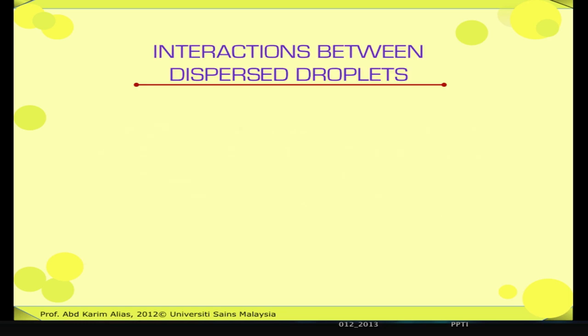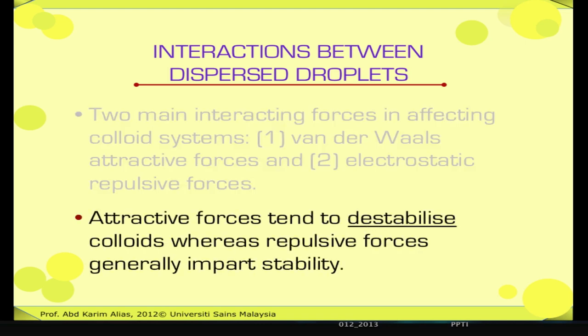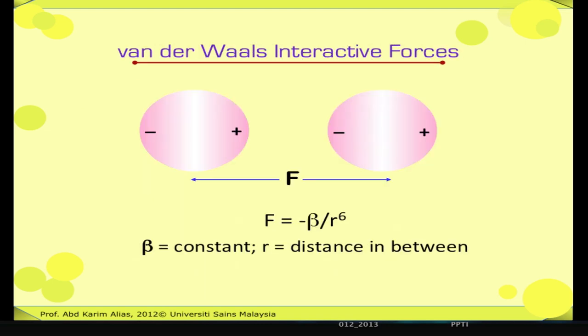From the previous explanation, basically in any emulsion or dispersed system, there are two main interacting forces affecting the degree of interaction between droplets: one, van der Waals attractive forces, and two, electrostatic repulsive forces. Attractive forces tend to destabilize colloids whereas repulsive forces generally impart stability. Van der Waals interactive forces originate from dipole-dipole interactions. The force between two droplets arising from van der Waals interactions is always attractive for like droplets, and the attractive force increases more rapidly as the droplets approach. The strength of the attractive force can be calculated using this equation.